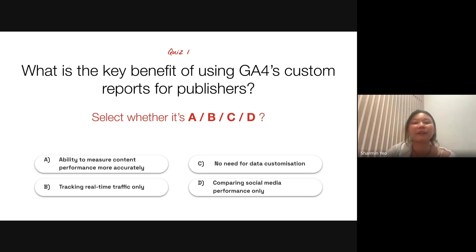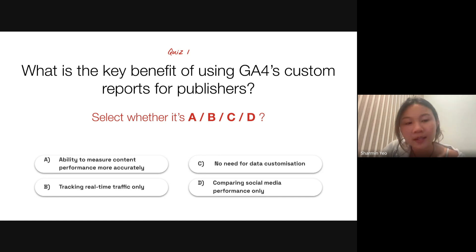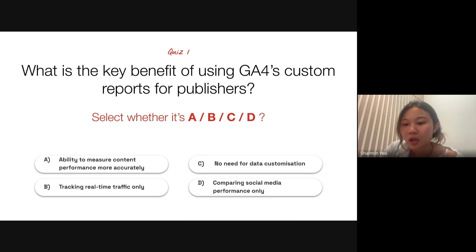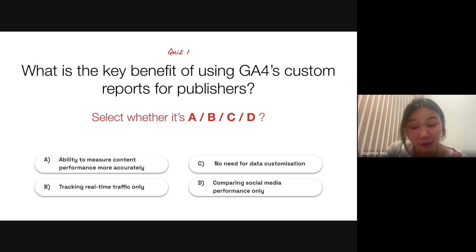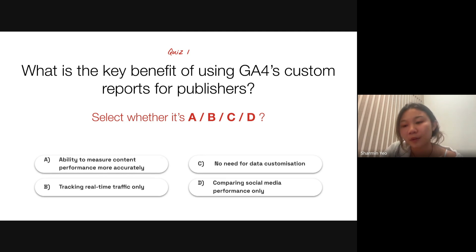All right, thank you for sharing the different types of reports. We're at our first pop quiz. The question is: what is the key benefit of using GA4's custom reports for publishers? Is it A — the ability to measure content performance more accurately? B — tracking real-time traffic only? C — there's no need for data customization? Or D — comparing social media performance only? I'm going to launch a poll, so feel free to select what you think is the right answer.